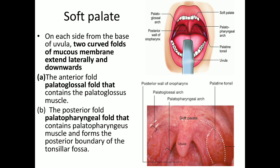From the base of the uvula, two folds of mucous membrane arise and pass laterally and downwards. One is the anterior fold and one is the posterior fold. The anterior fold is called the palatoglossal fold, which contains the palatoglossus muscle, and the posterior fold contains the palatopharyngeus muscle. These two folds form the boundary of the tonsillar fossa, in which the palatine tonsil lies.